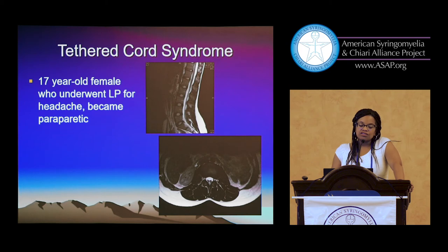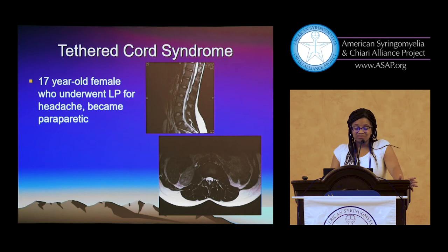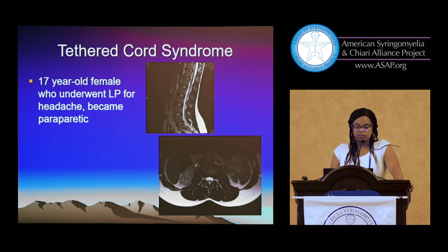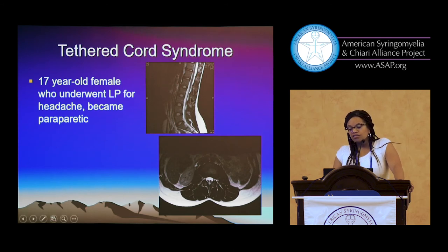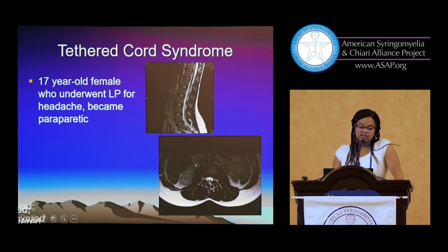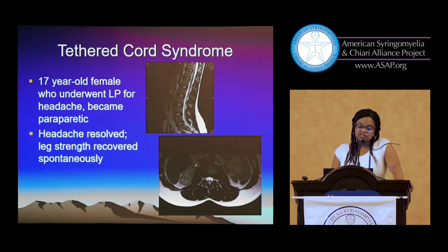This is a 17-year-old who underwent a spinal tap and then became paralyzed. She couldn't move her legs for about a day or two, and then started getting movement back. Very subtle findings of tethered cord — pulled dorsally and thickened. She underwent spinal cord untethering and regained everything.